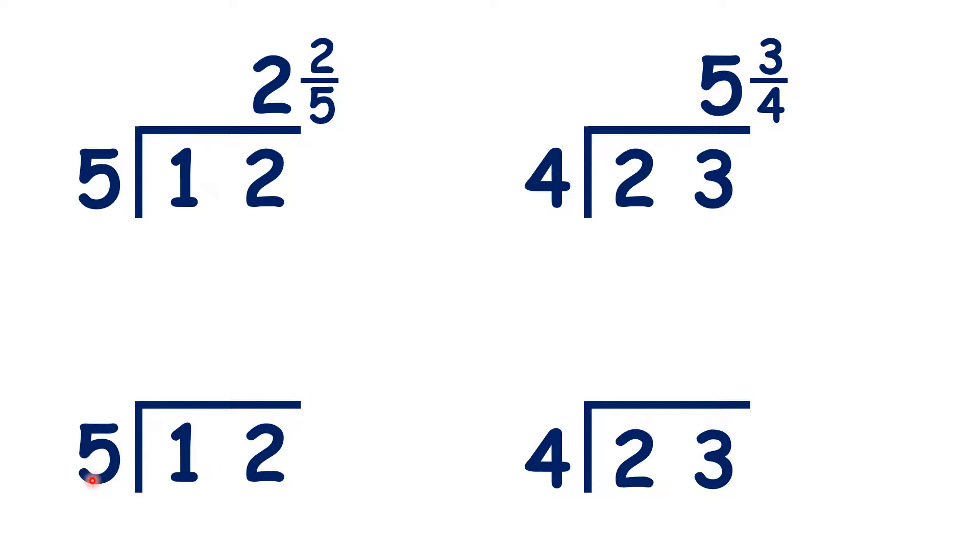So 12 divided by 5 is 2 remainder 2. We can write 2 as normal, but now what can we do with our remainder? Well, we need to extend our question with a point 0. Any number followed by point 0 is still the same number, but now we can move our remainder to the next place value column, here the tenths column.